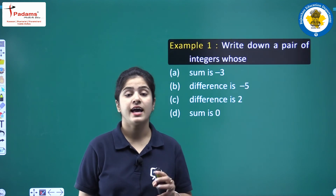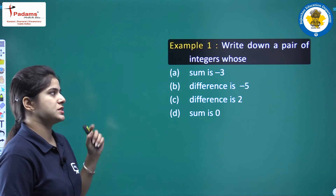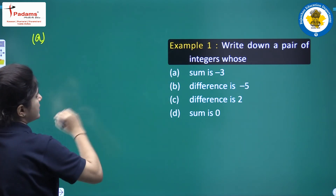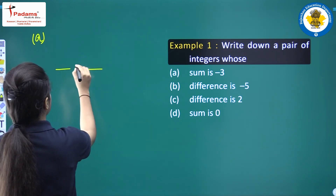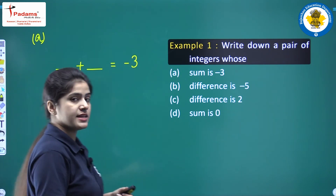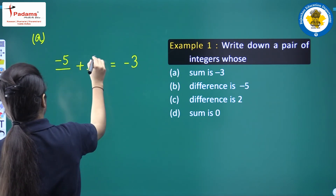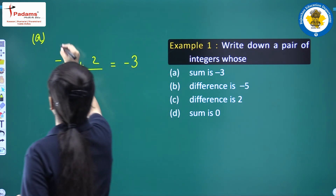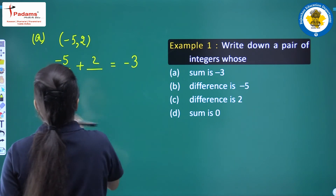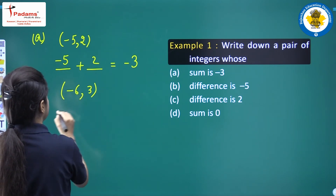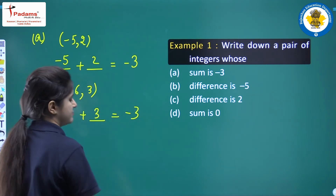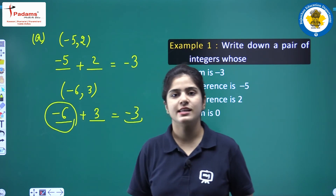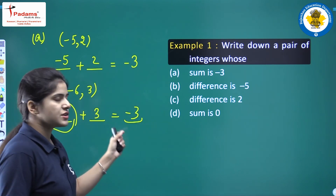Now we will discuss an example: write down a pair of integers whose sum is minus 3. If we take minus 5 and 2, then minus 5 plus 2 equals minus 3. We can also take minus 6 and 3: minus 6 plus 3 equals minus 3. The answer is negative because the larger number contains a negative sign.